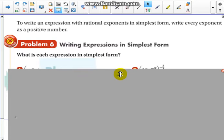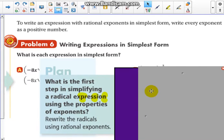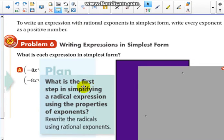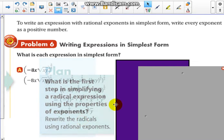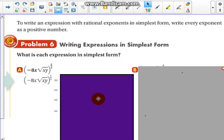Okay, so it says what is each expression in simplest form. We have two problems here which I'm going to work with. The first one, and notice that we've got a plan here and it says what is the first step in simplifying a radical expression using the properties of exponents. Rewrite the radicals using rational exponents.